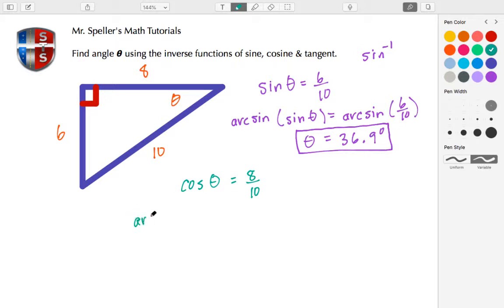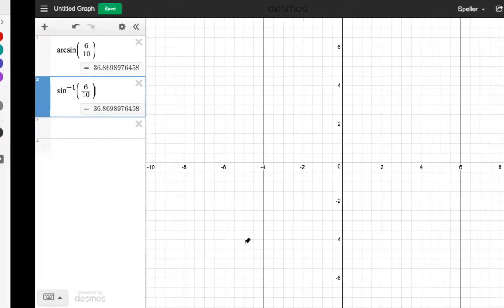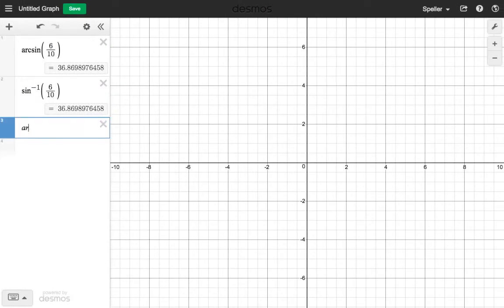So here we have the arc cosine of cosine theta, and we're going to take the arc cosine of eight tenths. Again, these inverse functions undo each other, and we're going to go back to Desmos to evaluate. So down here we have the arc cosine of eight tenths.